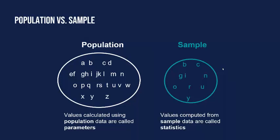Suppose you take the letters of the English alphabet. There are 26 letters, and imagine each letter is paid a salary based on how much it's used — A makes a lot of money because you use it a lot, Z doesn't make much because how often do you say words like 'zoo' or 'zephyr.' When you investigate all 26 letters, this is a population because it's the complete values. If you wanted to take the average salary of these 26 letters, this would be called a parameter because it's a value calculated from an entire population.